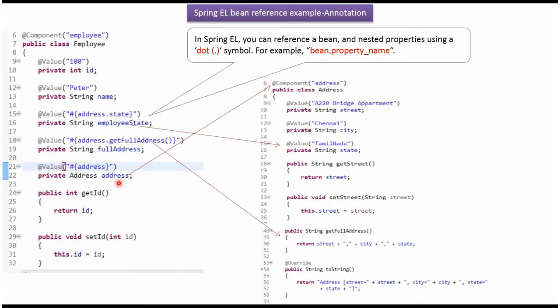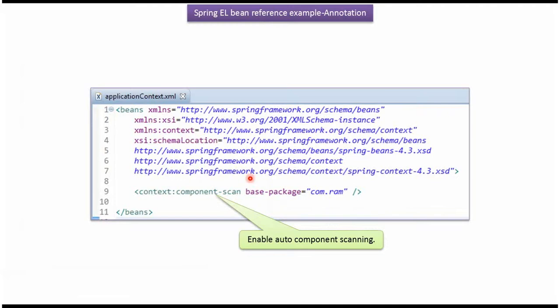The Address property will be injected as AddressBean. This is a Spring configuration file, and here I have enabled auto component scanning for this package.